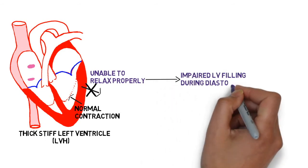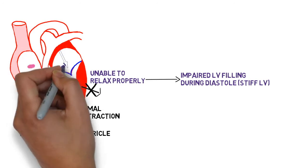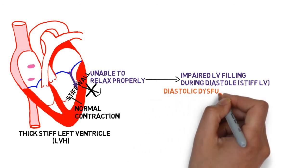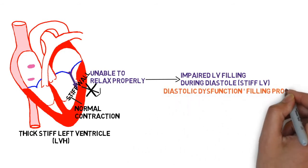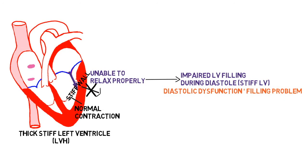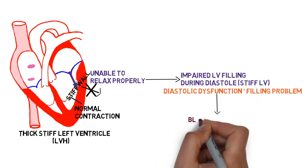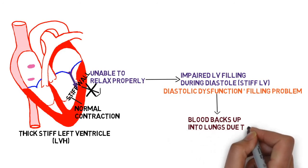There is impaired left ventricular filling from the left atrium during diastole, because diastole is when the left ventricle is supposed to fill. This arrow represents blood coming from the left atrium. The left ventricle is supposed to be relaxing and accepting more blood, but instead the blood hits a stiff wall and less blood is accepted — this is diastolic dysfunction, a filling problem.